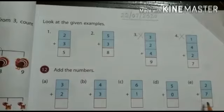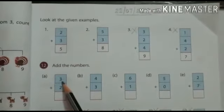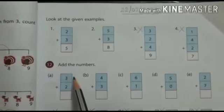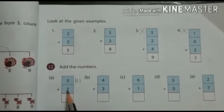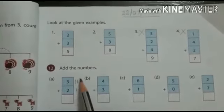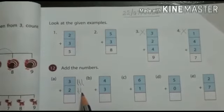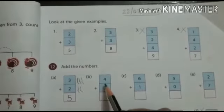In this exercise, you can see that these sums are vertical. First sum: 3 plus 2. The first number is 3—you draw 3 lines: 1, 2, 3. The next number is 2: 1, 2. Total lines are 1, 2, 3, 4, 5. So the answer is 5. Now look at the next sum.